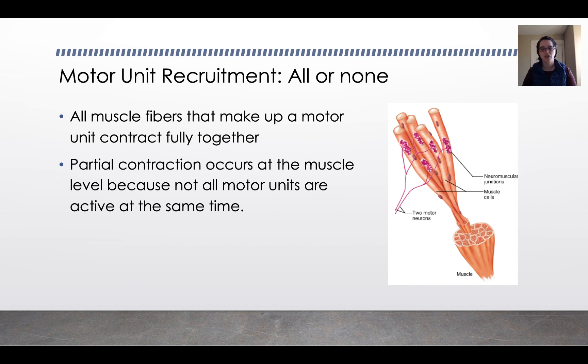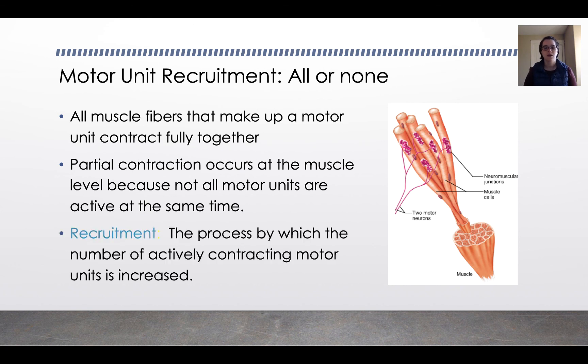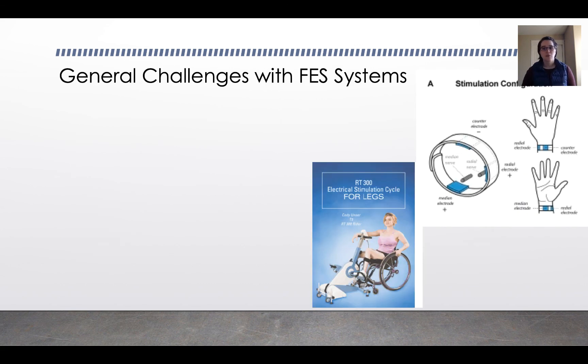And partial contraction, so if you want to do something less than your maximum voluntary contraction for a muscle, partial contraction occurs at the muscle level by not recruiting all of the motor units that make up that muscle. So you're not recruiting 100% of the motor units, but for any one motor unit that's recruited, you're recruiting 100% of those fibers. Recruitment is the process by which the number of actively contracting motor units is increased. So when we say we're recruiting more fibers or motor units, we're saying turn on more and more units at a neural level.